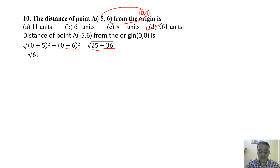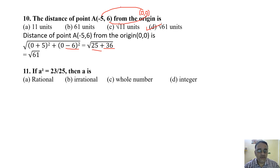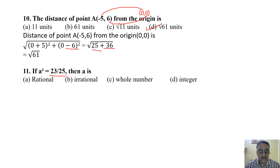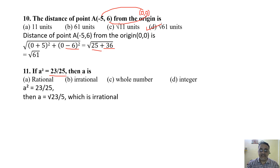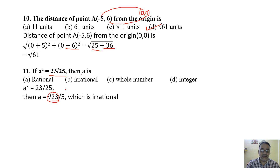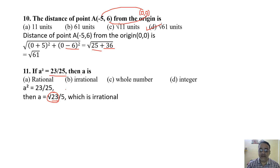Question 11: If A² = 23/√5, then A is. Taking square root: A = √(23/√5) = √23/5^(1/4). Since 23 is a prime number, √23 is irrational, and dividing an irrational number by a rational number always gives an irrational number. So A is irrational.